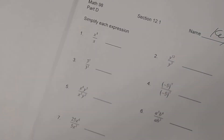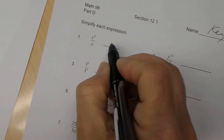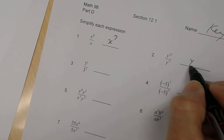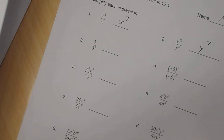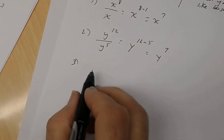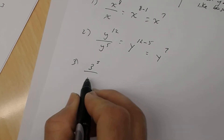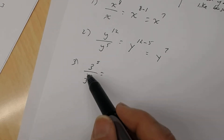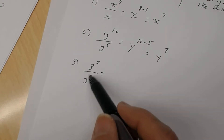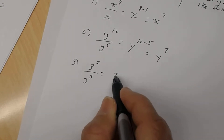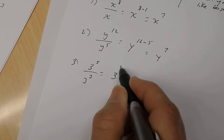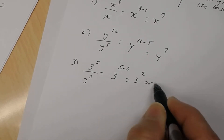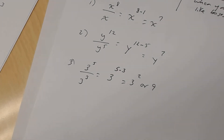So the answer to number 1 is x to the 7th, and the answer to number 2 is y to the 7th. Number 3: you have 3 to the 5th power divided by 3 to the 3rd power. Again, you're dividing like bases — the base in both cases is 3. So it's 3 raised to the 5th subtract 3, which is 3 squared, or you can say 9.